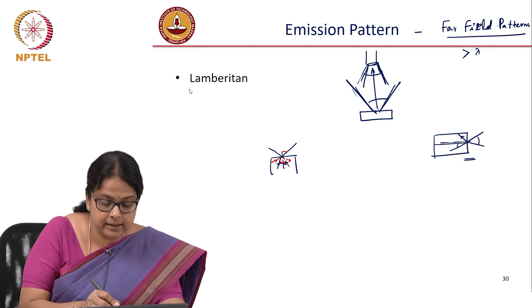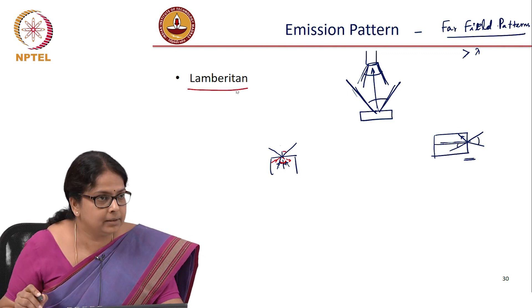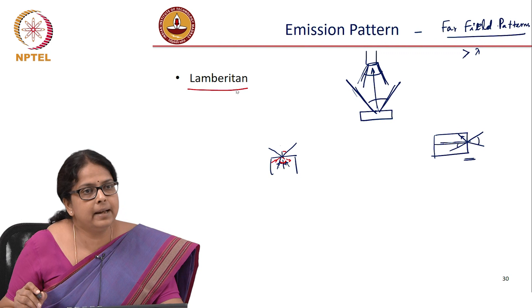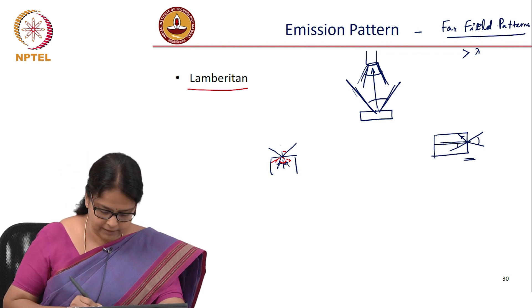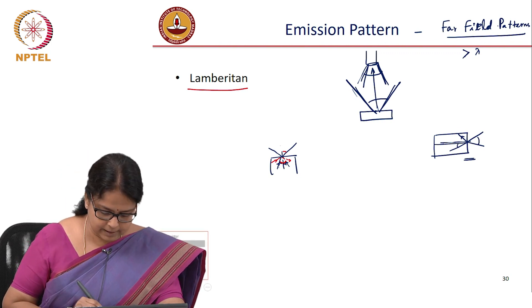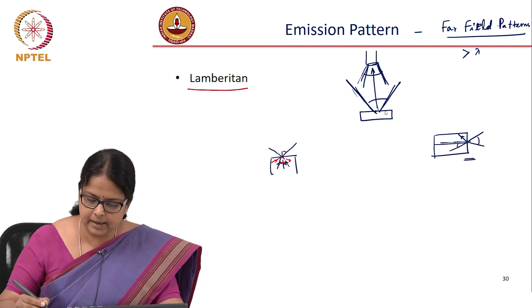In fact, you say that the LED emission is a Lambertian. What is a Lambertian? Intensity falling exponentially is not Lambertian. Lambertian is an emission where,